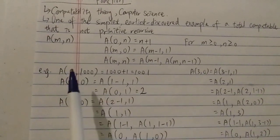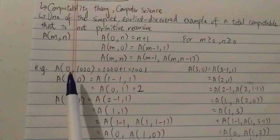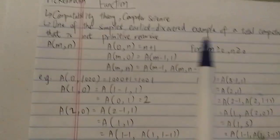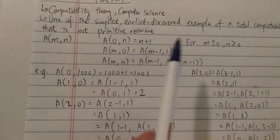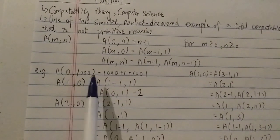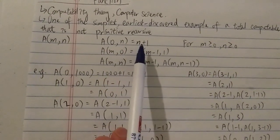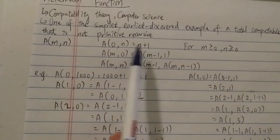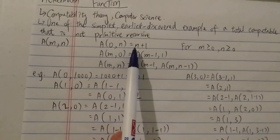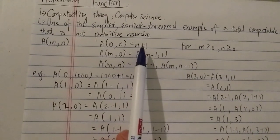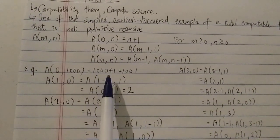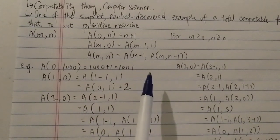The first example is A(0, 1000). Looking at the first case: if M is zero, you just get N plus one. So A(0, 1000) equals 1000 plus one, which is 1001. Of course, you could put a googol here and the answer would just be a googol plus one.